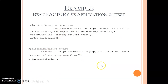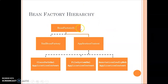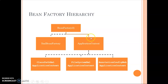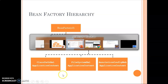Here is the hierarchy: BeanFactory is our root interface. XmlBeanFactory implements the BeanFactory interface. ApplicationContext is an interface that inherits BeanFactory, and it has three implementation classes: ClassPathXmlApplicationContext, FileSystemXmlApplicationContext, and AnnotationConfigWebApplicationContext. The dotted lines represent 'implements' and solid lines represent 'inherits' in this diagram.